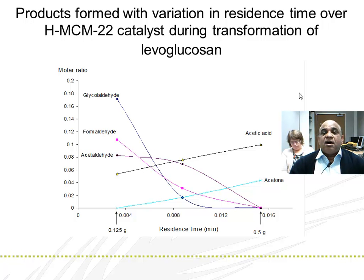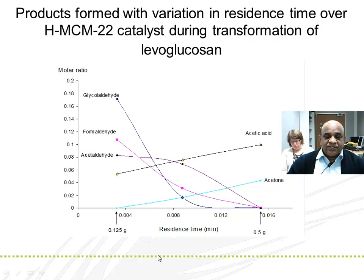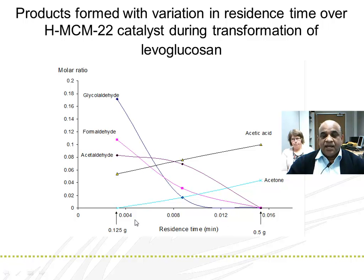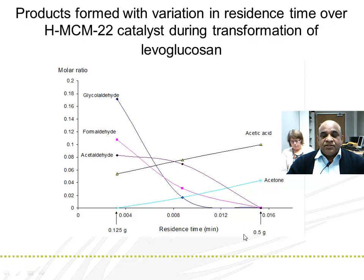levoglucosan is highly influenced by the residence time. The residence time has been studied by varying the mass of the catalyst — that is, different amounts of catalyst were tested. We find that with a larger amount of catalyst